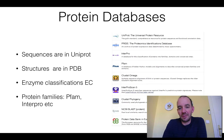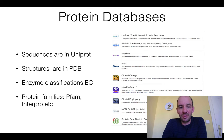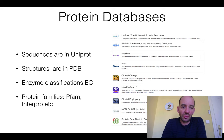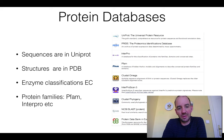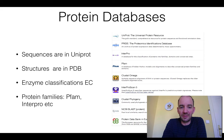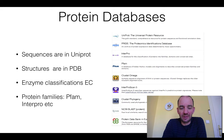There are several different protein databases, and similar to gene databases, there are both European and American versions. However, most are now synchronized. UniProt is the main hub for protein sequences, and PDB is the main database for protein structures, with European, Japanese, and American interfaces. For protein family classification there are many other databases that we will go through later in this course.